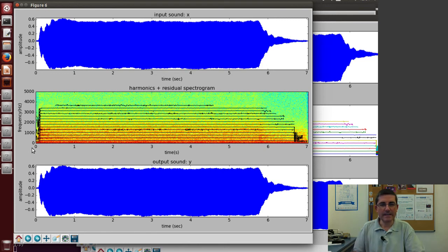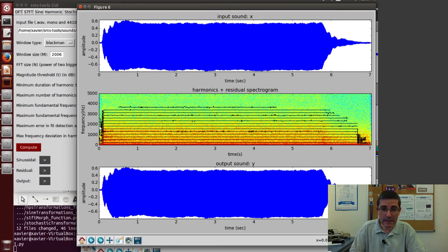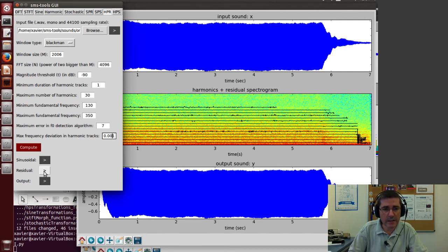This is what we got. Here we see the harmonics as black lines, and the background spectrogram is the residual. We can listen to the different components. We already heard the harmonics, but let's listen to the residual. Yeah, that's a very clear, nice sound that was missing from the harmonic sound.